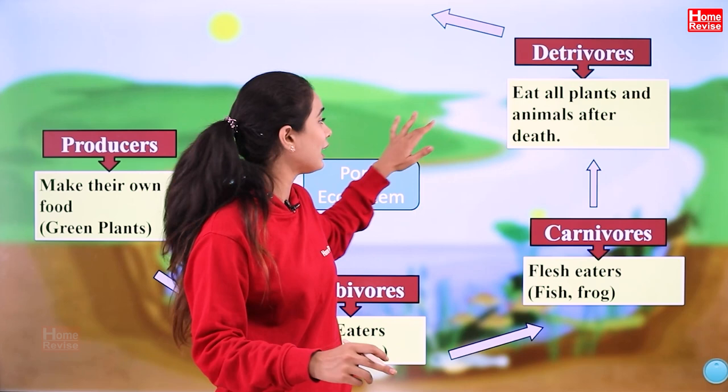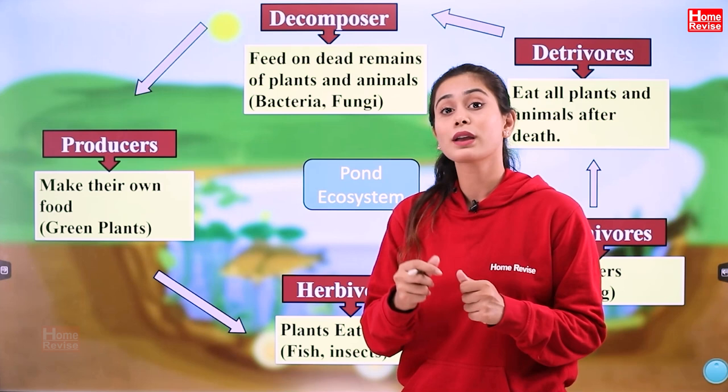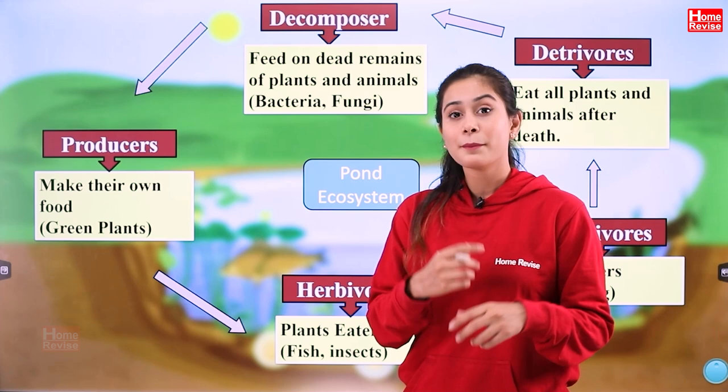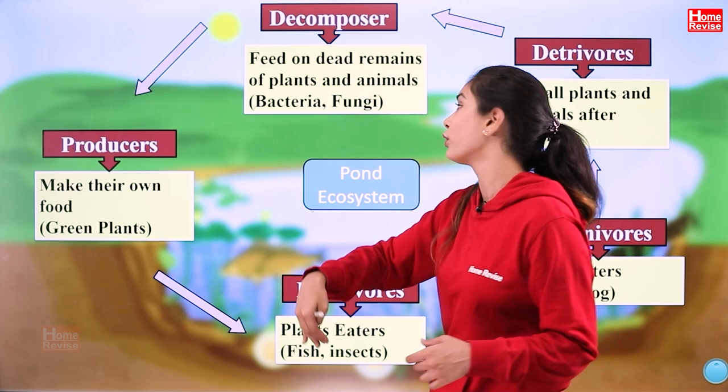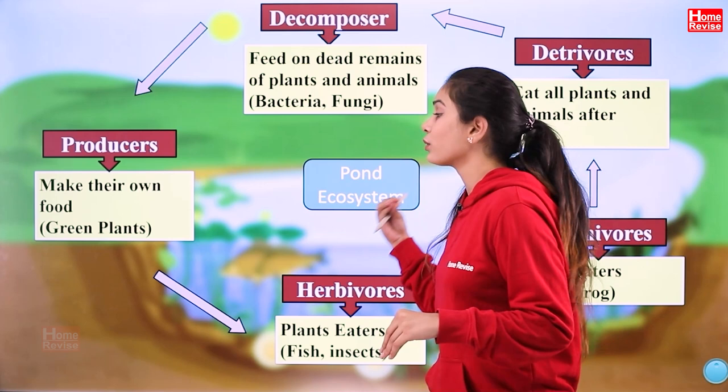There will be a time when an organism dies naturally. When they die naturally, they mix into the soil and water. Microorganisms will decompose them — so they are called decomposers. They feed on the dead remains of plants and animals. These decomposers are bacteria and fungi.